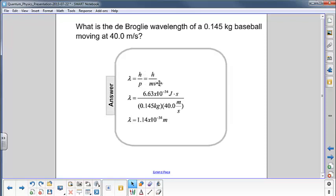We know that momentum of a baseball, in the classical sense, is just the mass times velocity. We put in Planck's constant, the mass of the baseball, and the velocity.